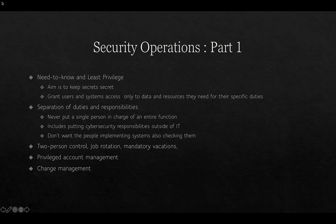Another approach is separation of duties and responsibilities — we never put a single person in charge of an entire function, which also involves putting cybersecurity responsibilities outside of IT. We don't want the people implementing systems to also be the ones checking them. In finance, for example, the people creating orders or doing payments shouldn't be the ones signing the checks. Two-person control means no one person is responsible for an entire function, helping to prevent fraud. Job rotation also helps highlight irregularities and potential fraud, as does mandatory vacations.